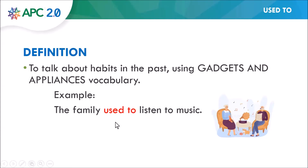Something important that you have to keep in mind is the verb. The verb with 'used to' is not in the past. We are talking about habits in the past, but the main verb is not in the past — because 'used to' is already in the past. 'Used' is the past of 'use' since it's a regular verb. So you don't need to write the main verb in the past.